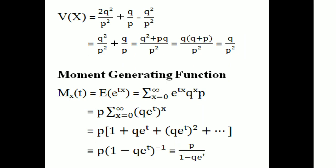Then the moment generating function M_X(t) = E[e^(tx)] = summation from x = 0 to infinity of e^(tx) · q^x · p = p · summation of (qe^t)^x = p(1 + qe^t + (qe^t)² + ...) = p · (1 - qe^t)^(-1) = p / (1 - qe^t).